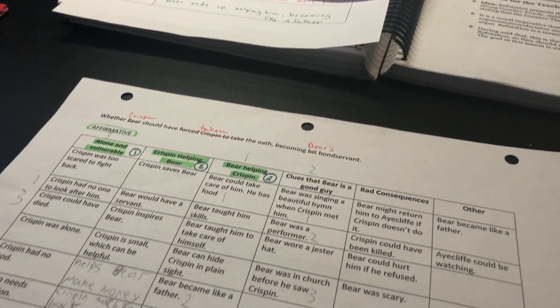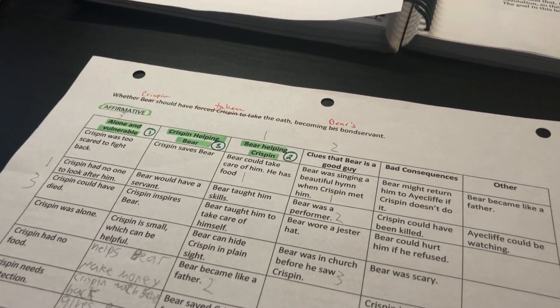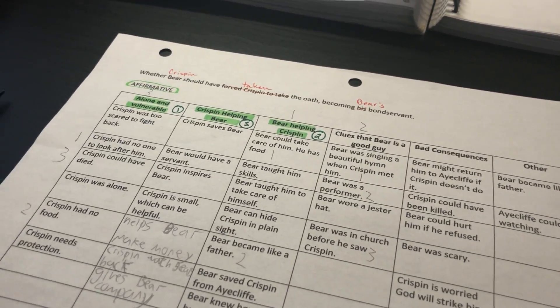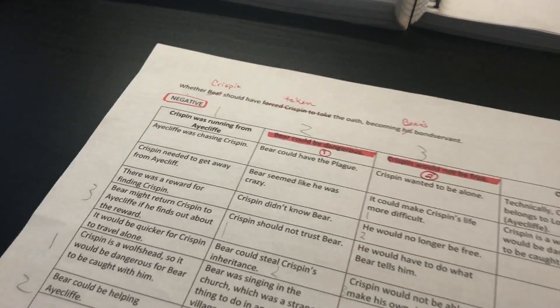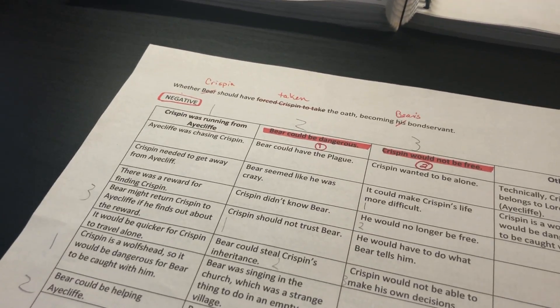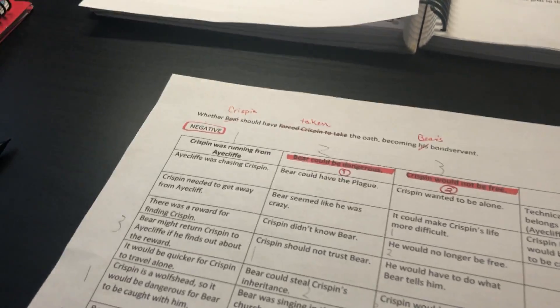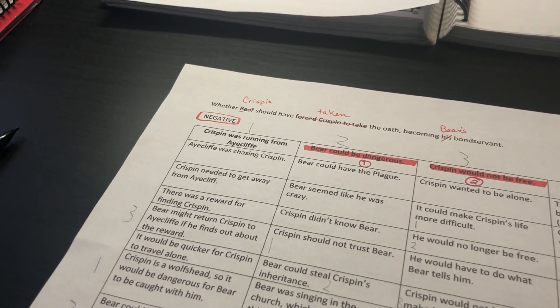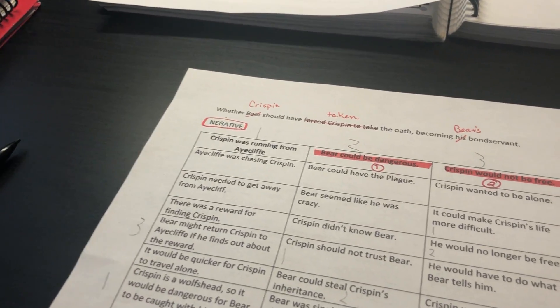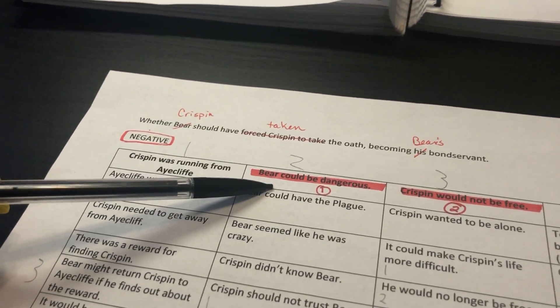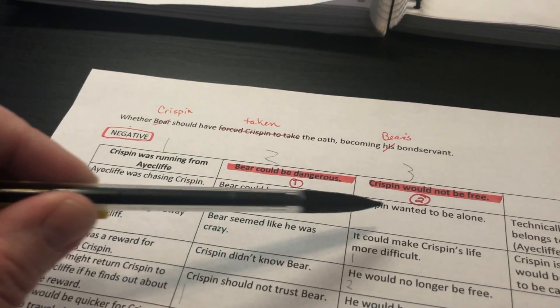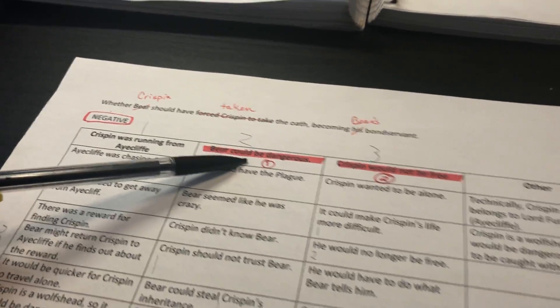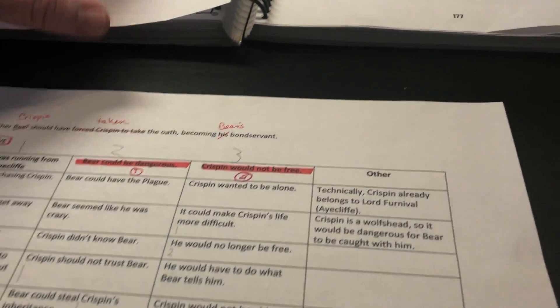At that point, since we've already done all of the work, we know what the people who disagree with us think. And all of that information is on our negative. So we had our conversation. This time we're only going to have two reasons. In the teacher guide, it talks about how you don't want to overpower your affirmative. So we're going to only choose two reasons for the negative. I think we picked that Bear could be dangerous and that Crispin would not be free.